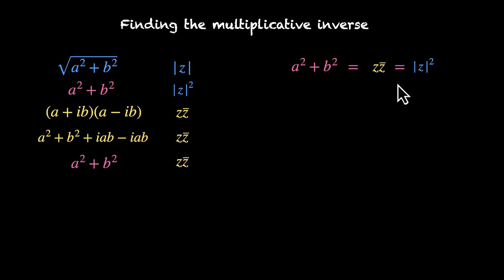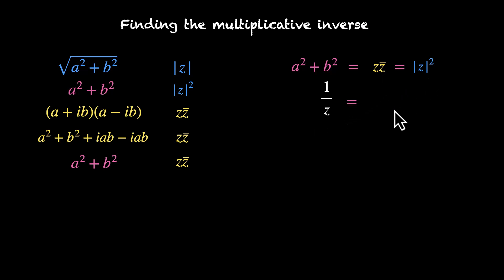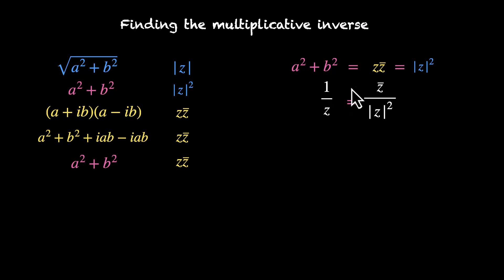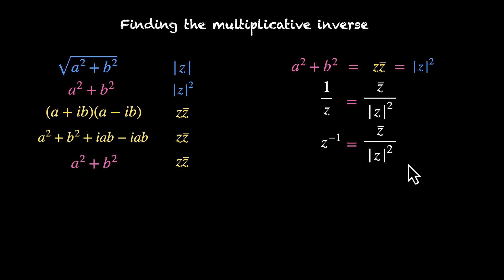We can use this to find the multiplicative inverse. Rearranging z · z-bar = |z|² gives 1/z = z-bar / |z|². So to find the multiplicative inverse or reciprocal of a complex number, find its conjugate and divide by its mod squared: z⁻¹ = z-bar / |z|².